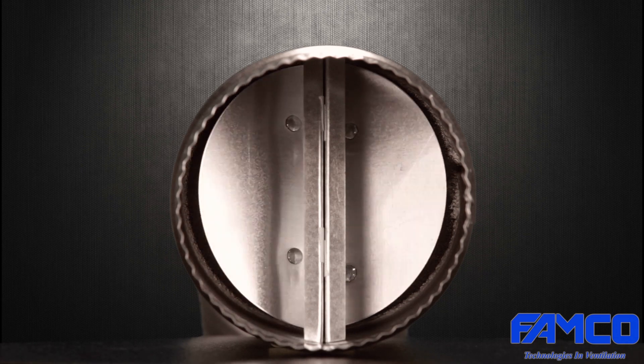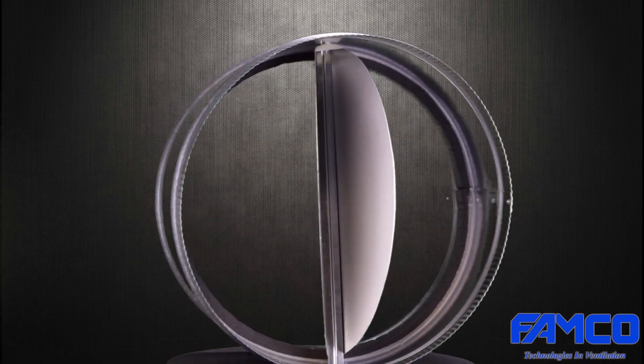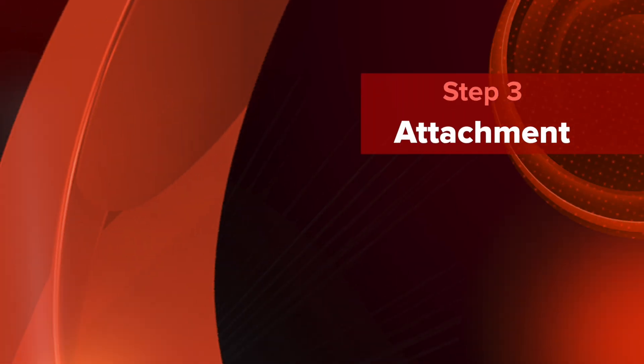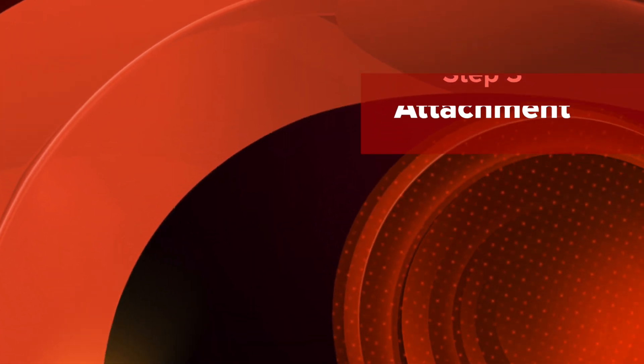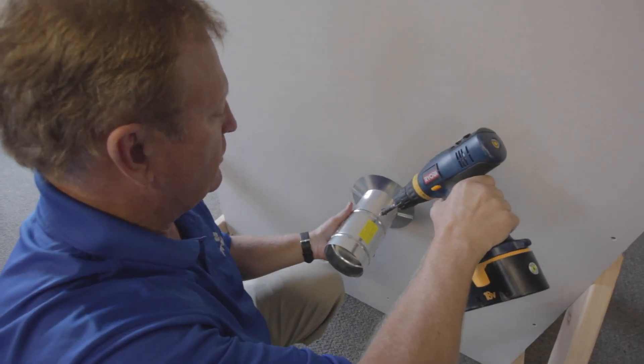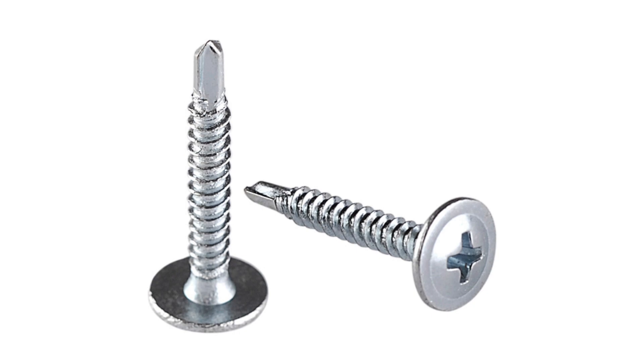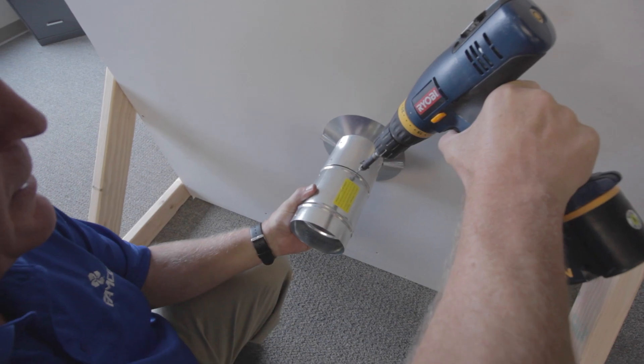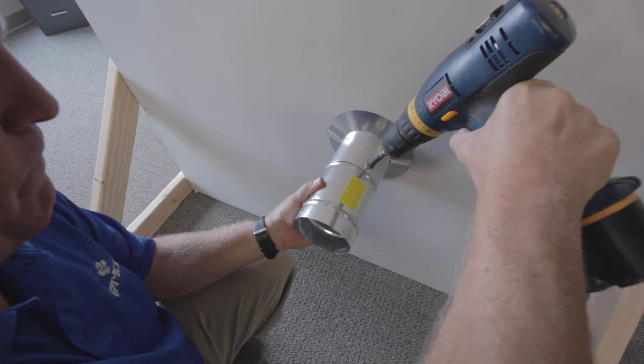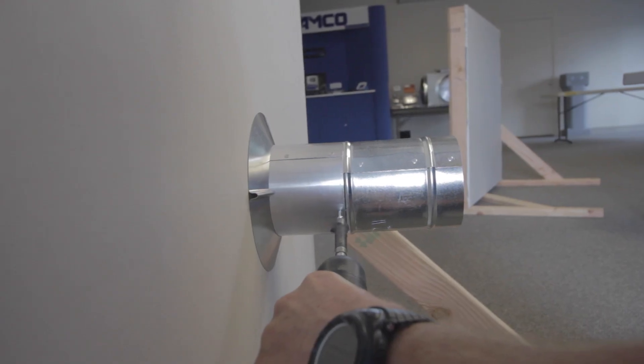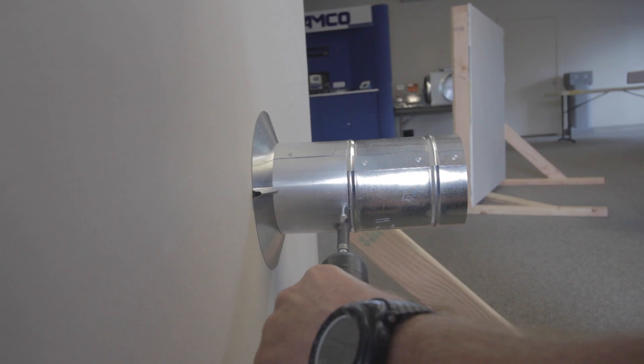For this step you'll only need three screws. We suggest using self-tapping metal screws. Here's another quick tip: drill your screws evenly along the diameter of the damper. By doing this you'll ensure a stronger install.